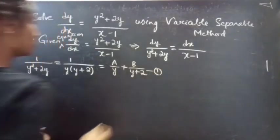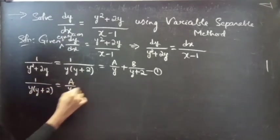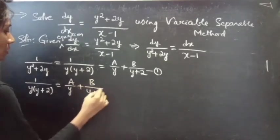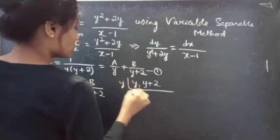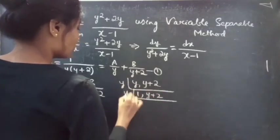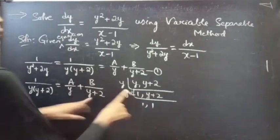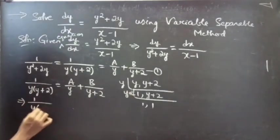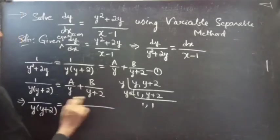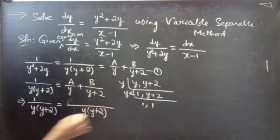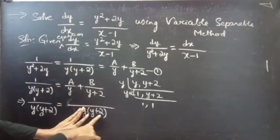Consider equation (1): 1 / [y(y+2)] = A/y + B/(y+2). The LCM of y and (y+2) is y(y+2). For the first fraction, the denominator is y, so leave y and multiply (y+2) to A.